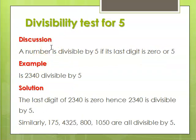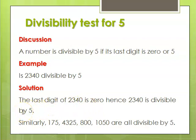To test divisibility by 5, a number is divisible by 5 if the last digit is 0 or 5. If a number ends with 0 or 5, then that particular number is divisible by 5. A good example is 2,340. Looking at the last digit, which is 0, then 2,340 is divisible by 5. Similarly, 175, 4,325, 8,000, and 1,050 are all divisible by 5, because the last digit is either 5 or 0.